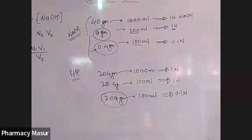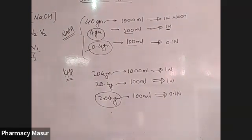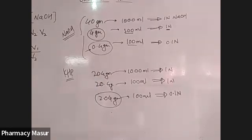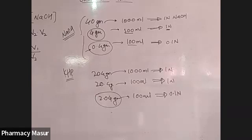For NaOH, when we add 40 grams to 1000 ml, we get a 1 normal solution. So, to prepare 100 ml of 1 normal NaOH, we add 4 grams. For this practical, we need to prepare 0.1 normal NaOH, so we add 0.4 grams of NaOH to 100 ml.